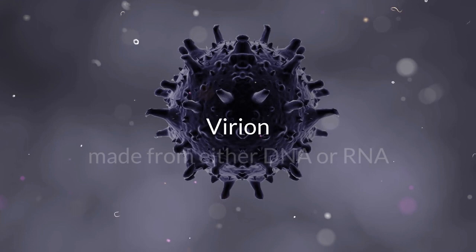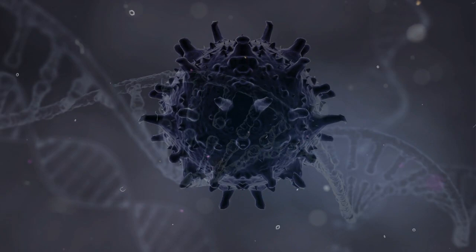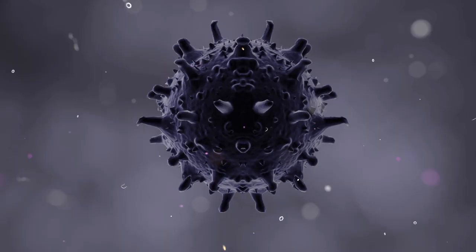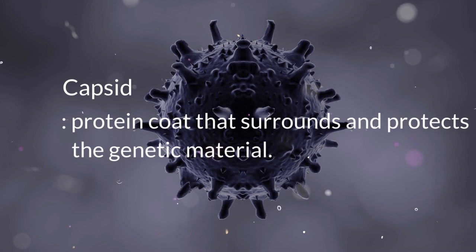A virus particle, called a virion, is made of genes from either DNA or RNA. These virions are made of genetic material, which are long molecules of DNA or RNA, that encode the structure of the proteins by which the virus acts.